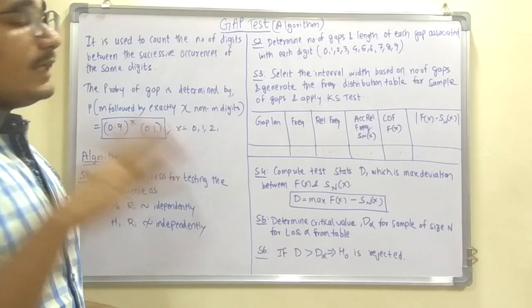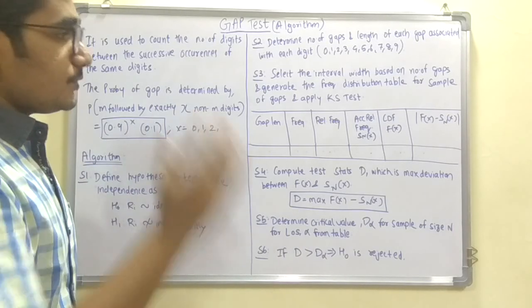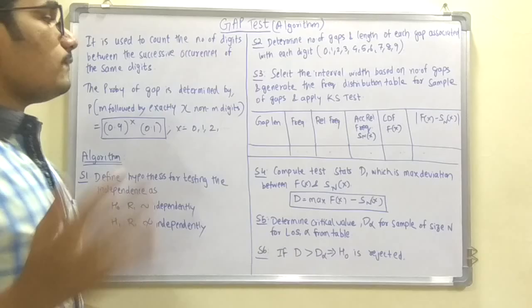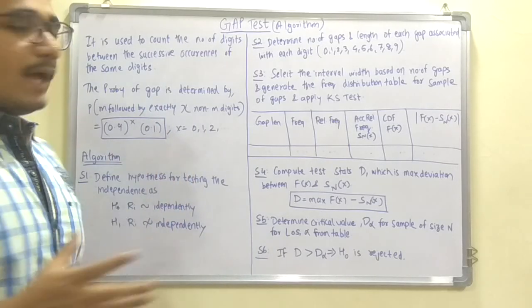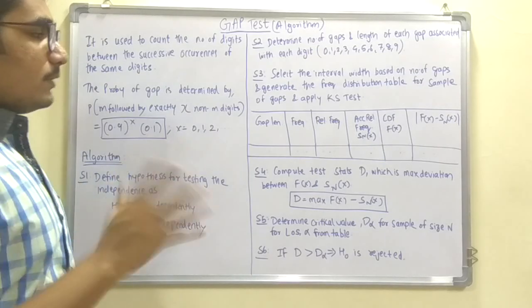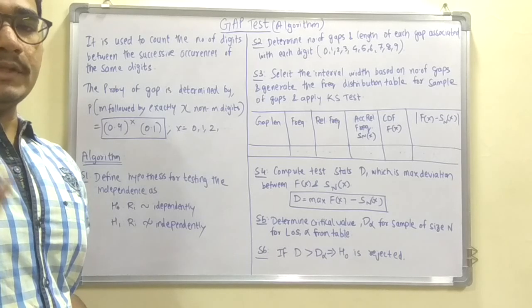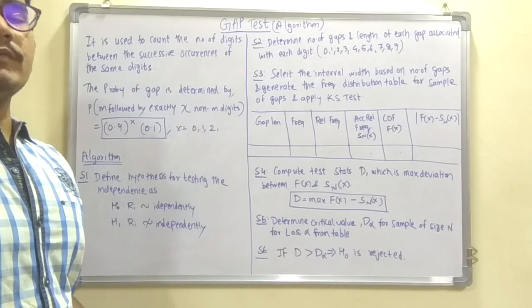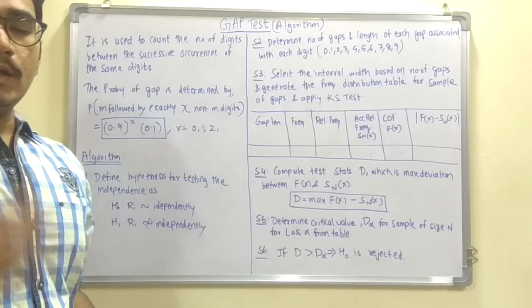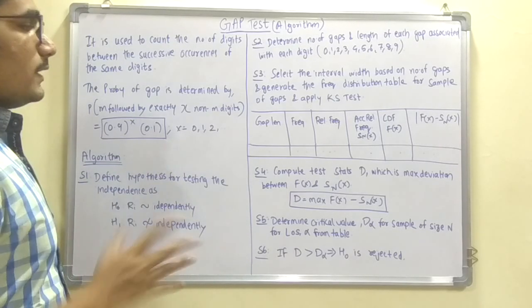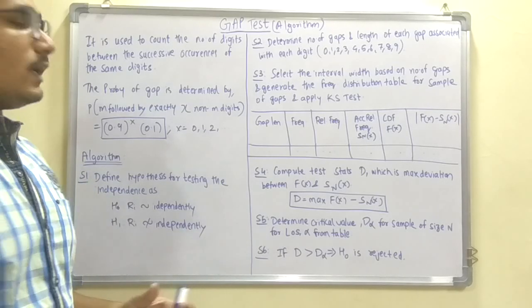Step 3 is to select the interval width based on the number of gaps and generate the frequency distribution table for the sample of gaps and apply the KS test. For example, the gap length or width might be 3 intervals, so it will be 0 to 3, then 4 to 7, then 8 to 11, 12 to 15, and so on. Gap length of 3 would be there, like a constant distance between each of these lengths.